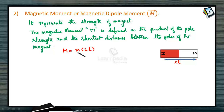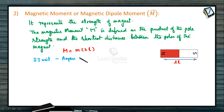The SI unit is ampere meter squared (Am²). The dimensional formula is Al².